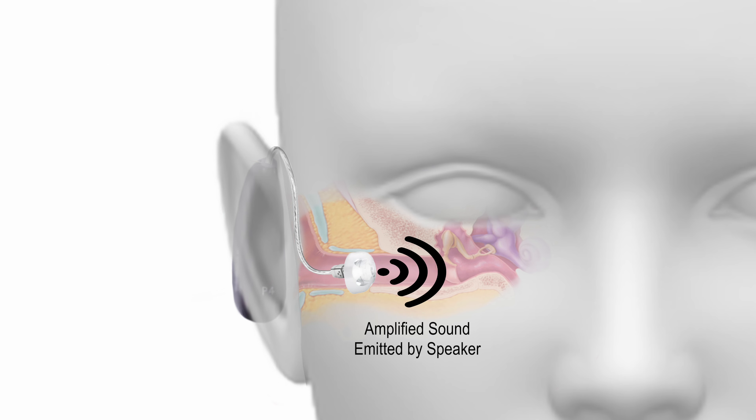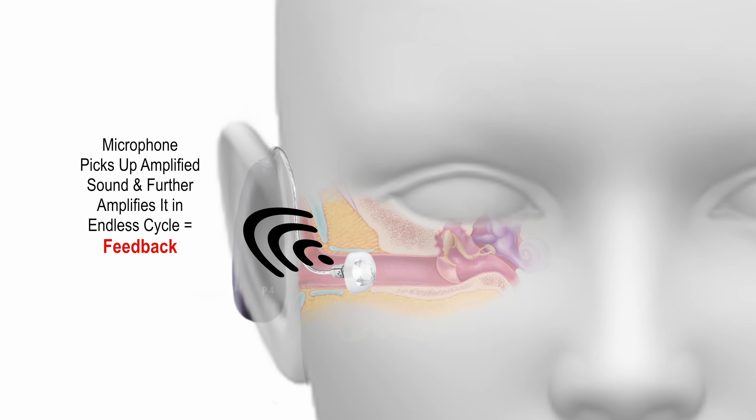Feedback is whistling or warbling that occurs when the hearing aid microphone picks up and amplifies any sound that leaks out of the ear canal in a cyclical manner. As such, you want to keep the vent as small as possible to prevent any sound leakage from coming out of the ear.